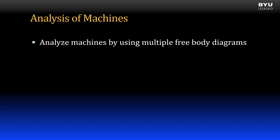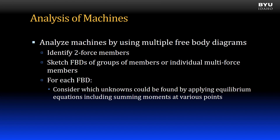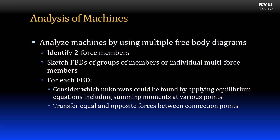We will analyze machines by using multiple free body diagrams. A key strategy will be to identify two-force members, since this will reduce the overall number of unknowns in our problem. Then we will sketch free body diagrams of groups of members or individual multi-force members. For each diagram we will consider which unknowns could be found by applying equilibrium equations, including summing moments at various points. We will transfer equal and opposite forces between connection points.